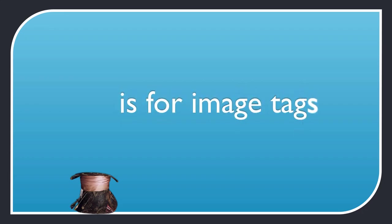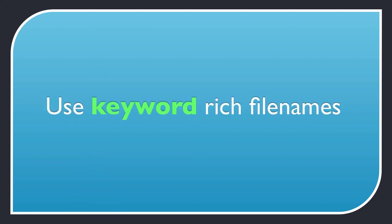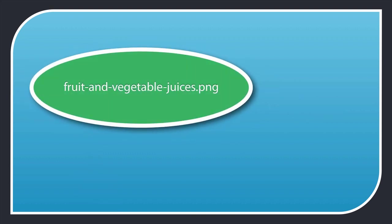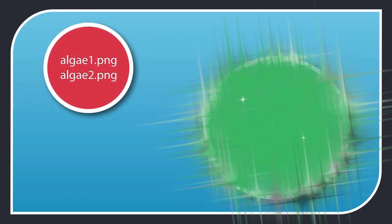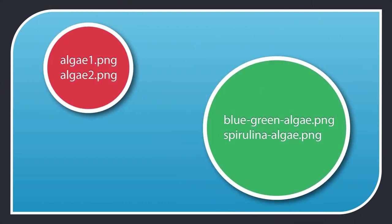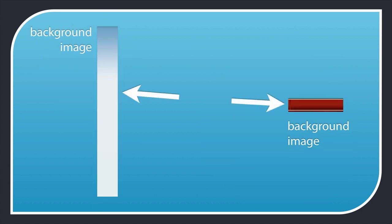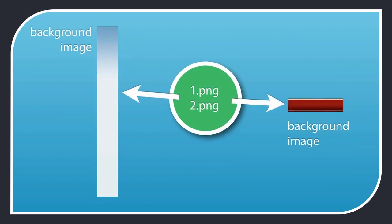I is for image tags. Give all your images keyword-rich names — for example, fruit-and-vegetable-juices. Make sure your names are rich and diverse, not algae1, algae2. If you have an image that isn't relevant, for example a logo or a background graphic, give it a number like 1 or 2. Google will ignore these images and they won't influence what Google thinks your page is about.